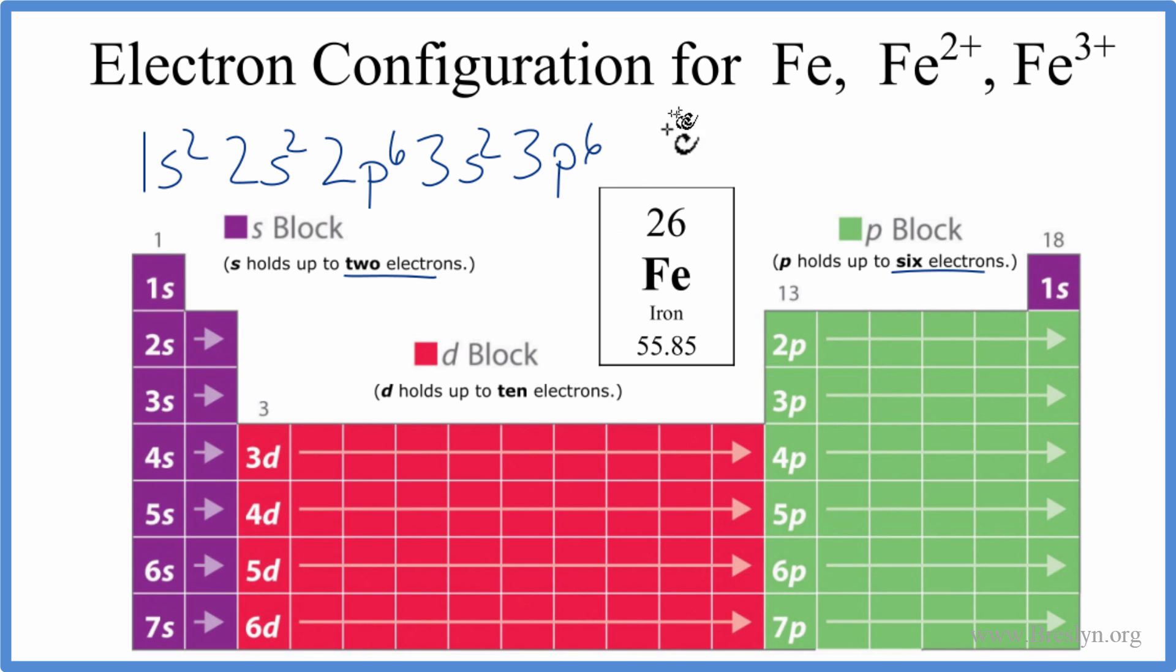We come back around to 4s². And this all adds up to 20 electrons. We have 20 electrons right now, we need 26. We get to the 3d. Ds can hold up to 10 electrons, but we don't need 10. We only need 6. We have 20 here, so if we put 6, that'll give us 26. And this is the electron configuration for Fe, iron.